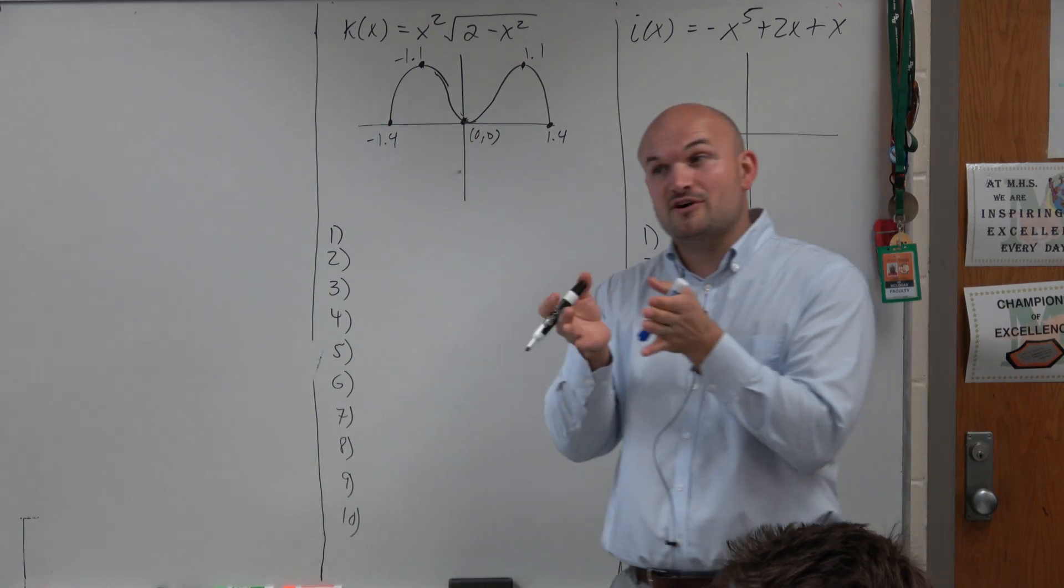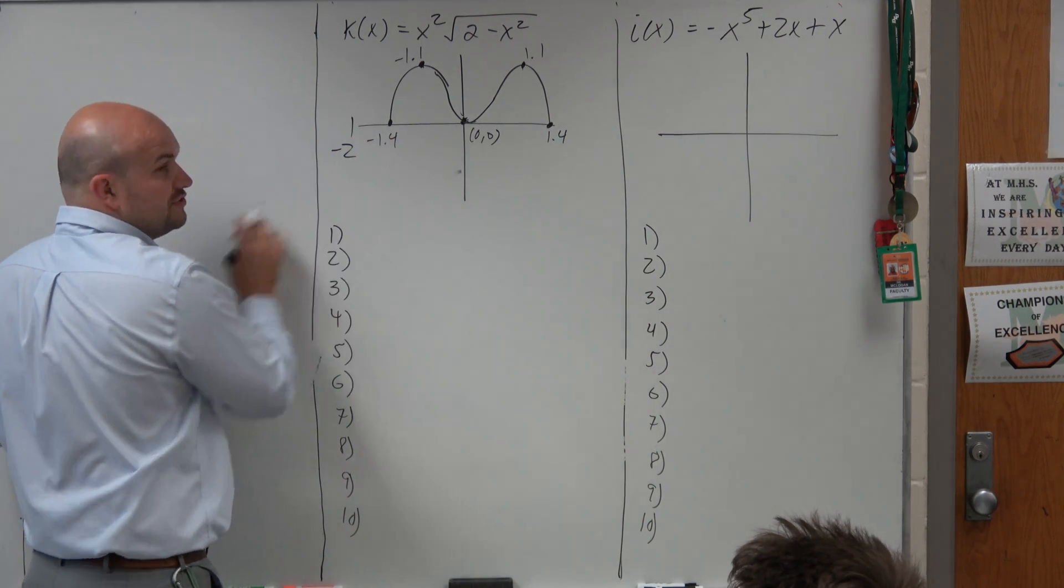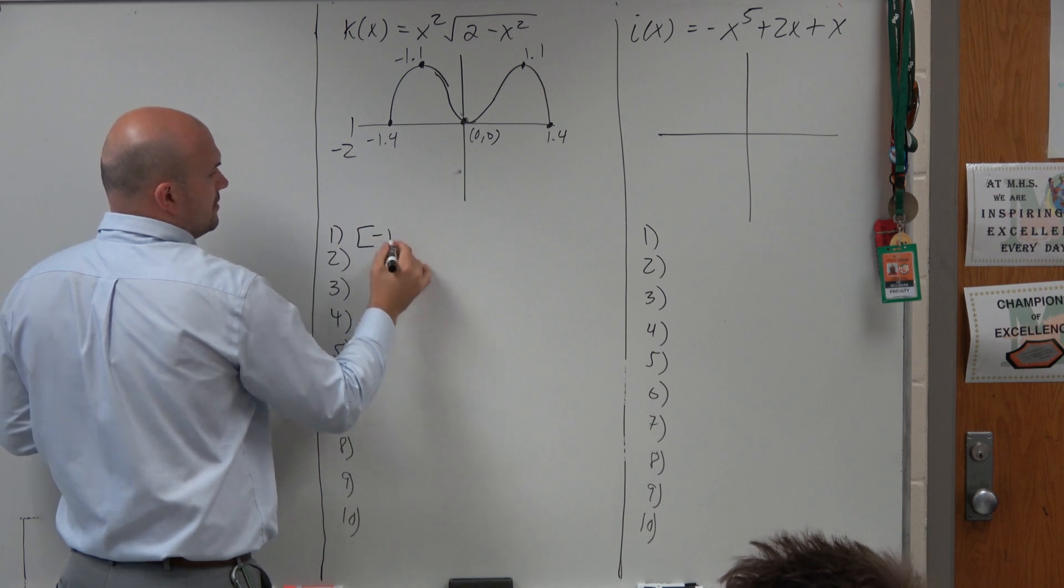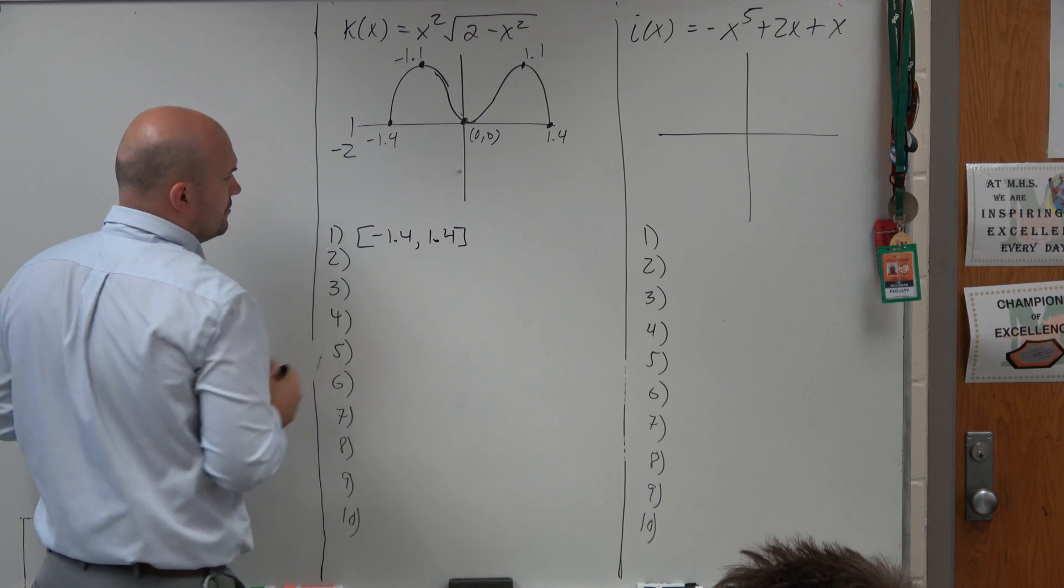You guys can see though, it is a continuous function, but the domain is restricted, right? There is no value negative 2 that's in our domain. But negative 1.4 to 1.4 is going to be our restricted domain.